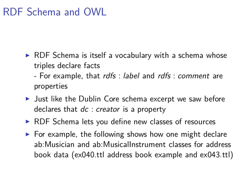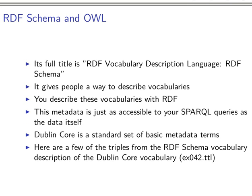Hello again. We continue our explanation of RDF Schema and OWL. We learned before what an RDF Schema is — it's a vocabulary description language that gives people a way to describe vocabularies. I just corrected the example file; it was 41 in the last video, now it's 42. RDF Schema gives us the ability to describe variables in triples, which can be queried by SPARQL just like the data itself. We also learned about Dublin Core as a standard set for basic metadata terms.